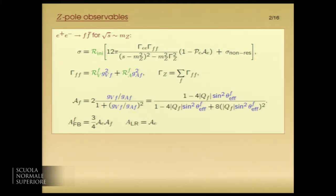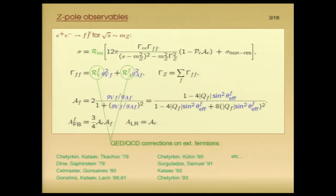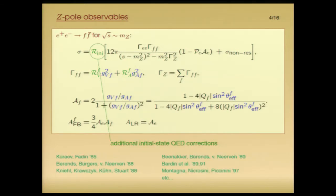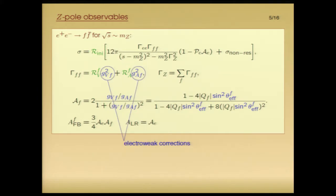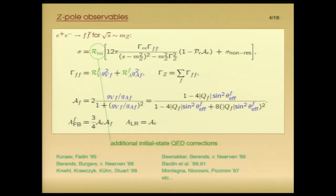The other most important electroweak precision observables are obtained from e plus e minus scattering on the Z-pole and there's a resonance piece which comes from the Z-resonance which can be parametrized in terms of the Z-partial width and there's a non-resonant piece which comes from photon exchange. Going to the next slide. Again for this observable one can separate QED and also QCD corrections of the external fermions which are contained in radiator functions and there has been a lot of effort to calculate these for the QCD case. Inclusively they are known up to four-loop level. Going to the next slide.